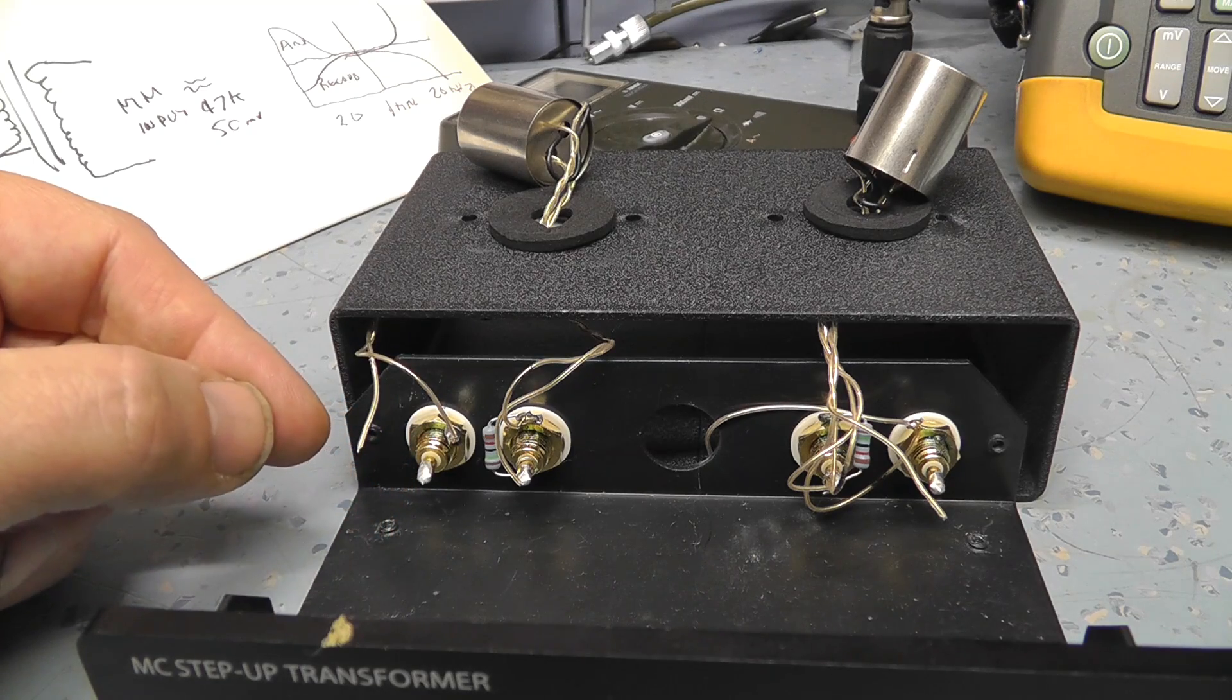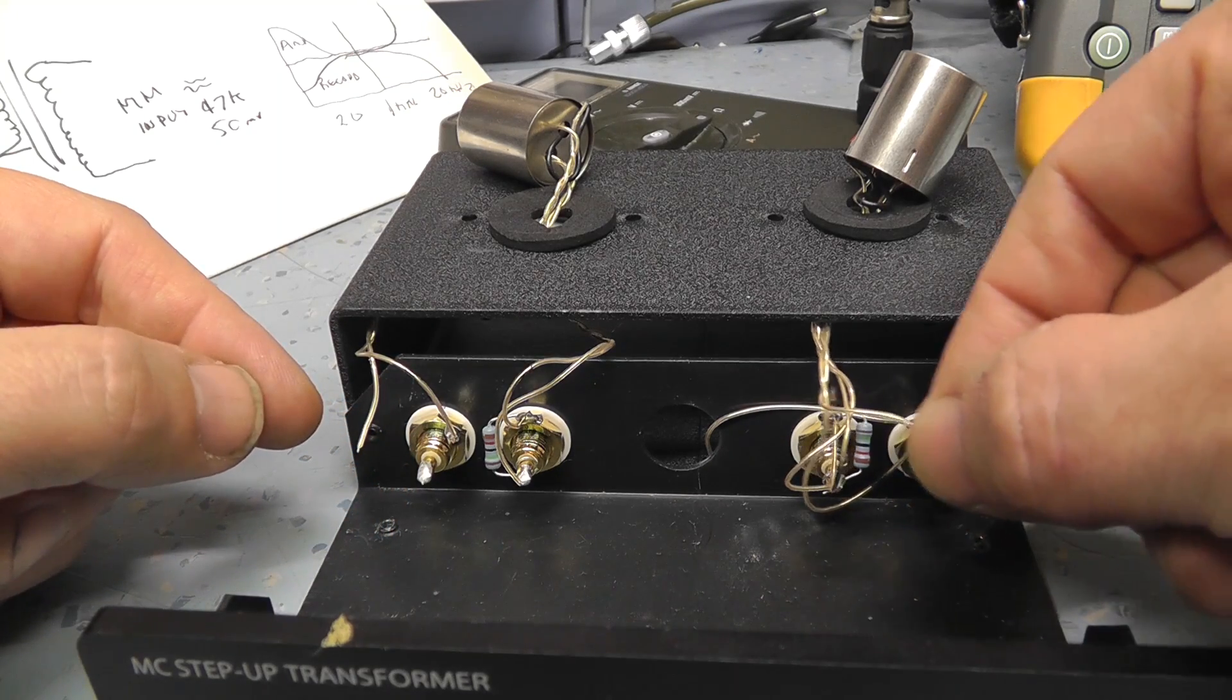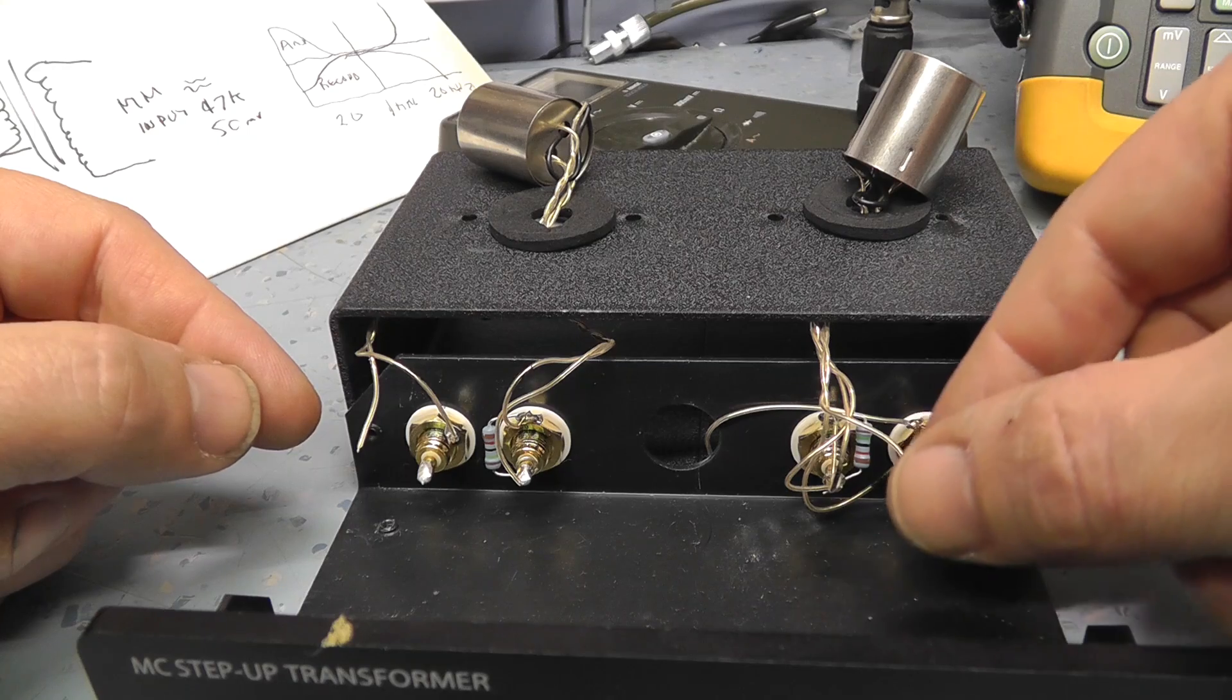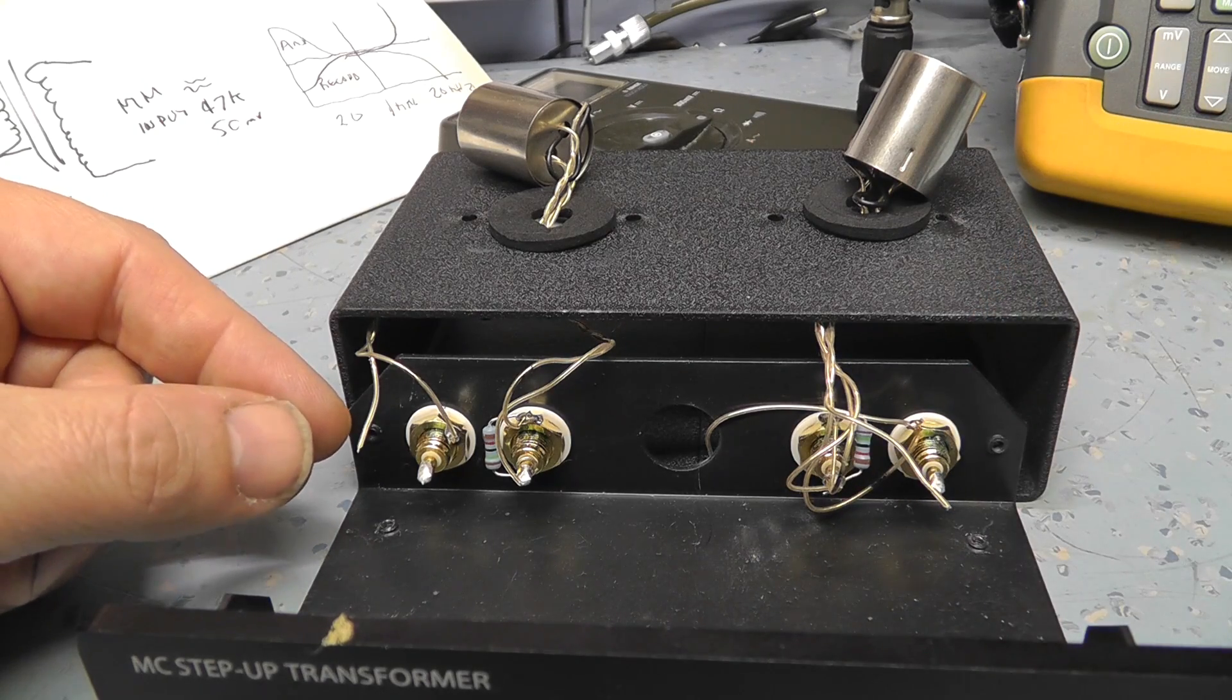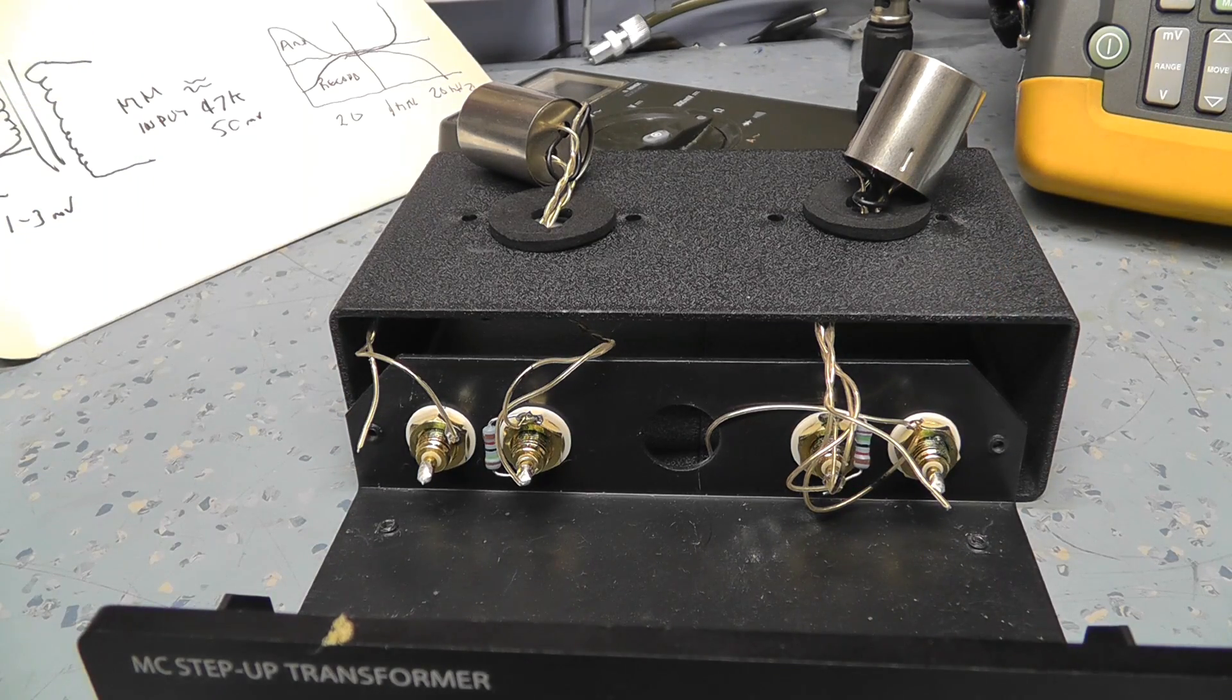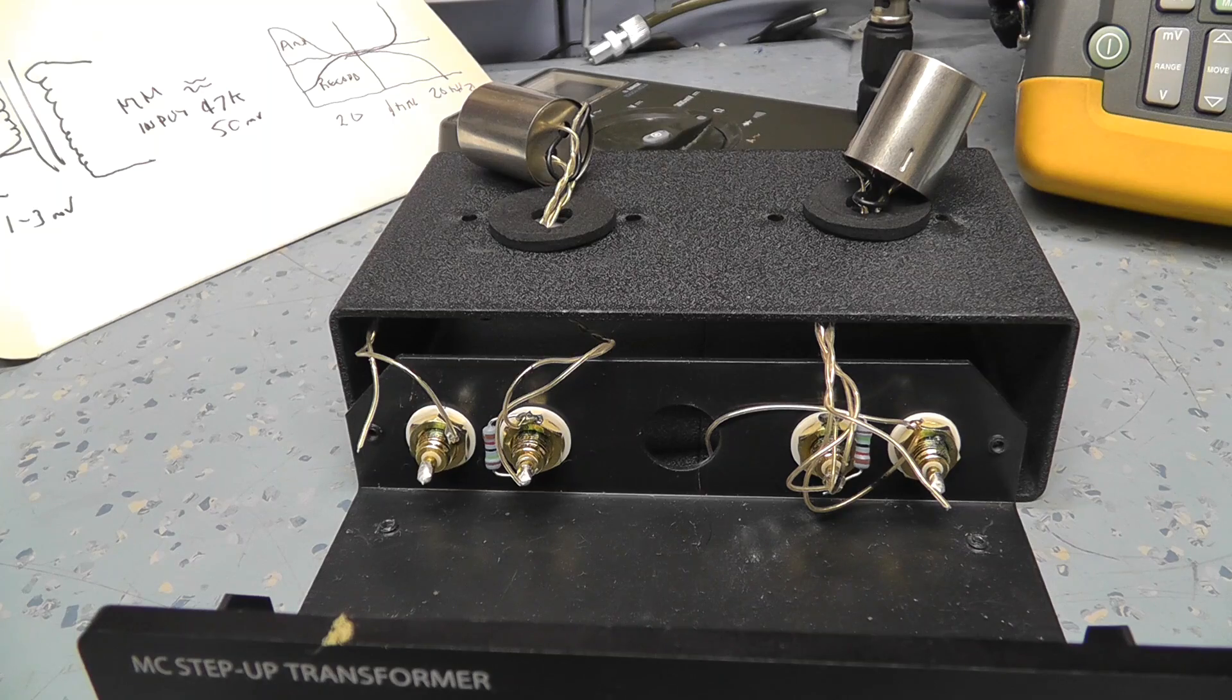So let's get these wires reconnected. And then I think it might be easier than I thought actually. So let's get these reconnected, get it back together and then do another resistance check. And then we can maybe connect it up to the Rohde & Schwarz audio analyzer or audio signal generator because it's got a low output impedance and just see if everything looks okay.